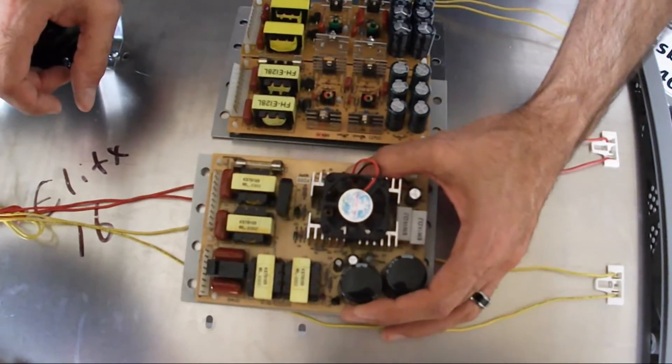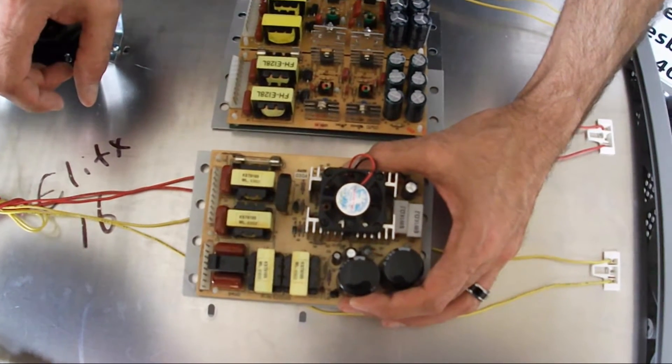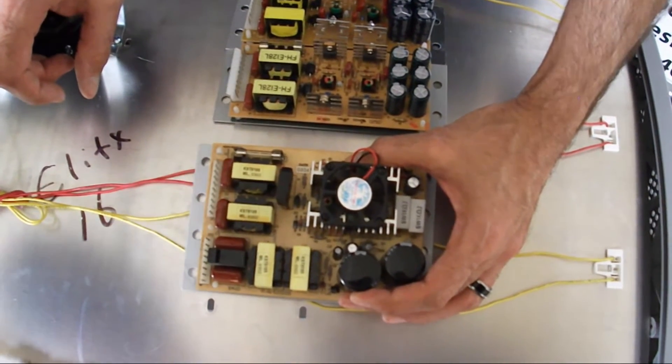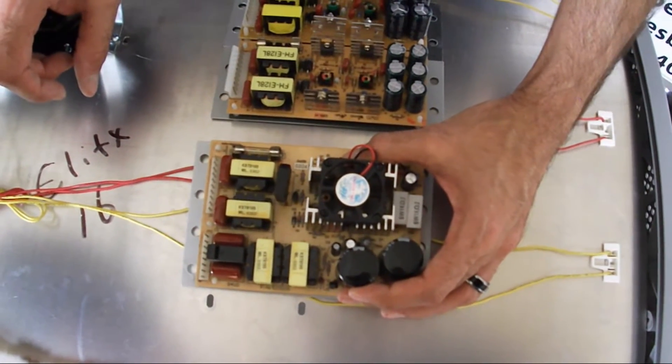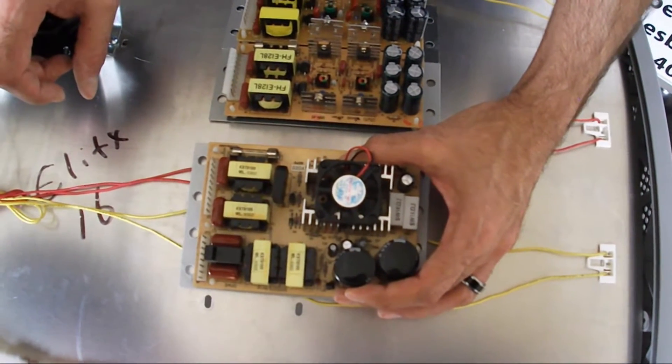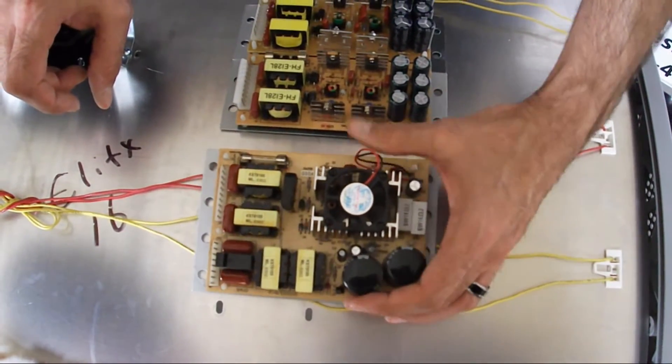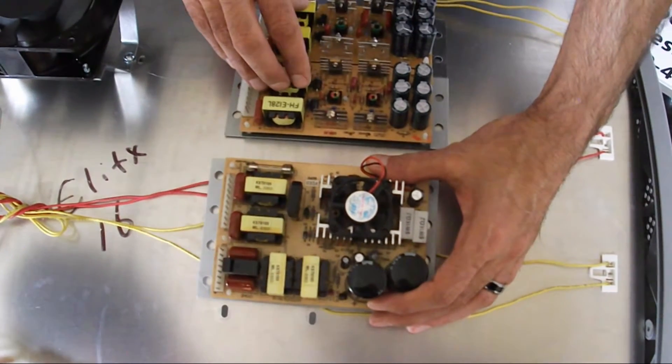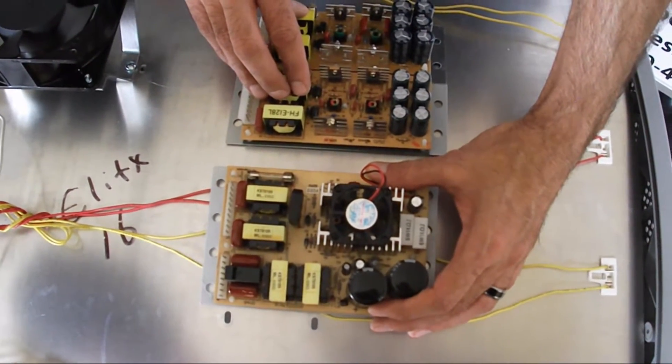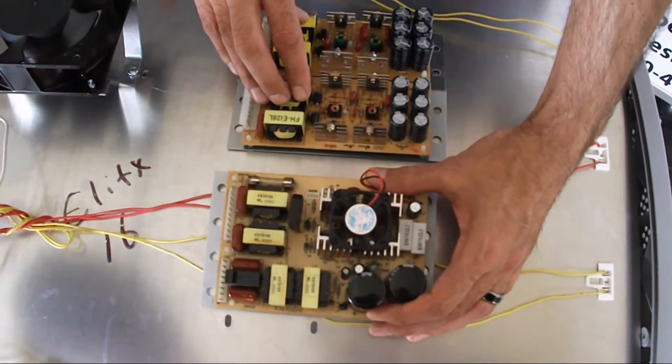This ballast here, this four-lamp version, was actually discontinued in the late 2000s, 2007 era, around there. And so if you have a ballast like this, certain models you could use two of the 10-pin ballasts in place of it, or you would retrofit the RT ballast in its place.